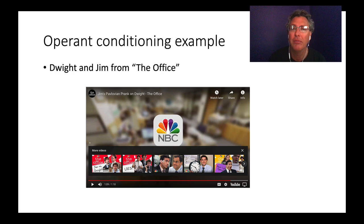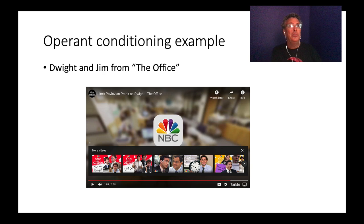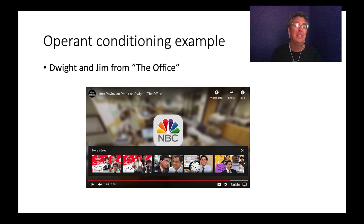This is a good example of how complex behaviorism can be. In the clip, there was the bell, then an offer of an Altoid, then the person said 'sure,' got the Altoid, and got a good taste in their mouth — a positive reward. So it went: bell, Altoid, sure — bell, Altoid, sure — and then just the bell produced the behavior. That's really classical conditioning, but we also have this element where after the classical conditioning, the person got a reward.